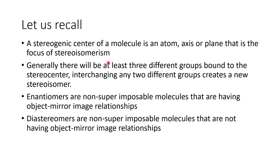Let us recall some of the basic things about stereochemistry. A stereogenic center of a molecule is an atom, axis, or plane that is the focus of stereoisomerism. We will be looking at examples of how point symmetry, center of symmetry, and plane of symmetry exist.